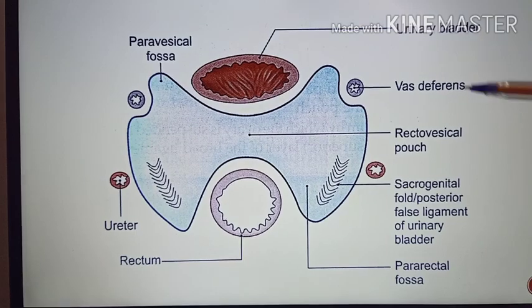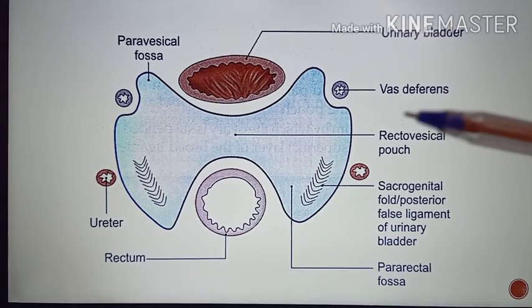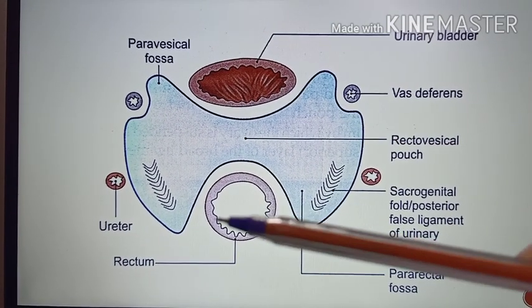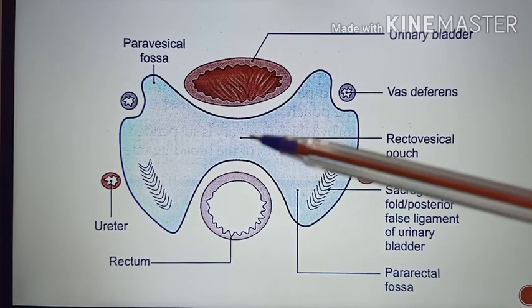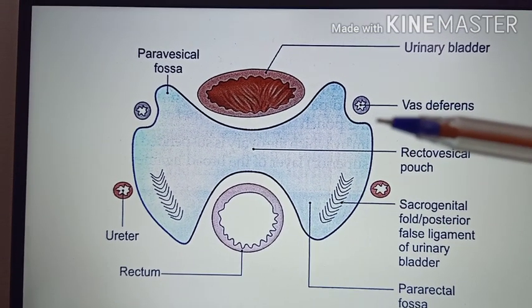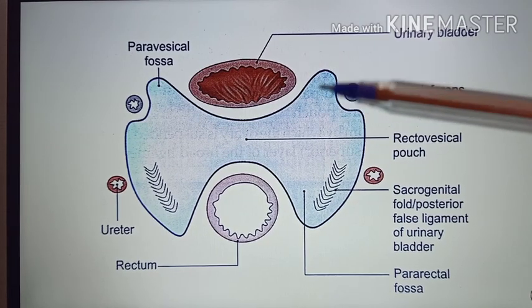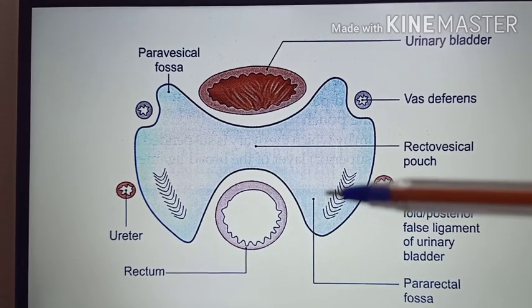Now we will study the horizontal tracing at the true pelvis in males and females. In the male pelvis, the structures visible are the urinary bladder and the rectum. In between them is a pouch called the rectovesical pouch. On the lateral aspect there are two fossae: the pararectal fossa and the paravesical fossa. There is also one fold called the sacrogenital fold.